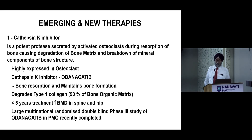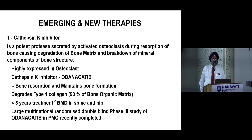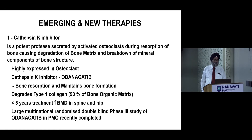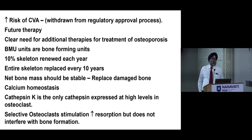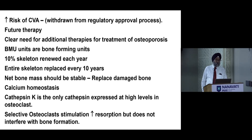Regarding new therapies, cathepsin K inhibitors — specifically odanacatib — were launched with much fanfare but have been temporarily withdrawn from the market due to a high risk of CVA and coronary artery disease. Odanacatib reduced bone resorption while maintaining bone formation, and reduced type-1 collagen degradation. It had a treatment period of less than five years and was studied in a large multinational randomized double-blind phase 3 trial. Due to the CVA risk, it has been temporarily withdrawn from regulatory approval but remains a therapy for the future.